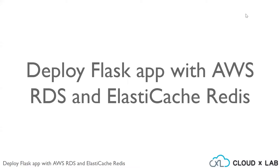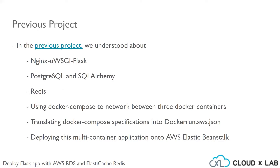Hi, welcome to the series on deploying Flask apps with AWS RDS and Elastic Cache Redis. In the previous project, we understood about NGINX, UWSGI, Flask, PostgreSQL, SQLAlchemy, and Redis using Docker Compose to network between three Docker containers, and translating Docker Compose specifications into dockerrun.aws.json and deploying this multi-container application onto AWS Elastic Beanstalk.